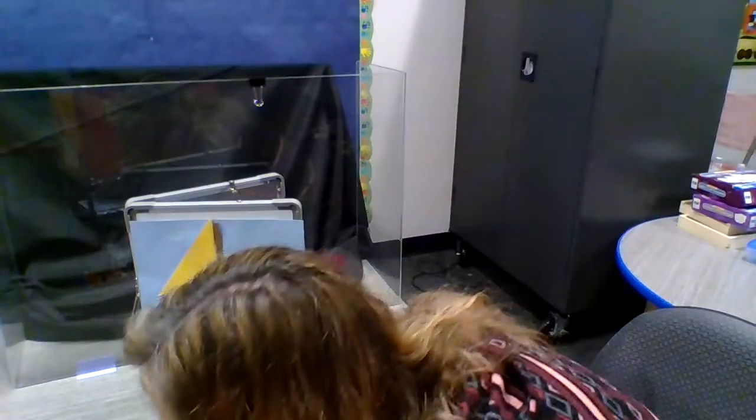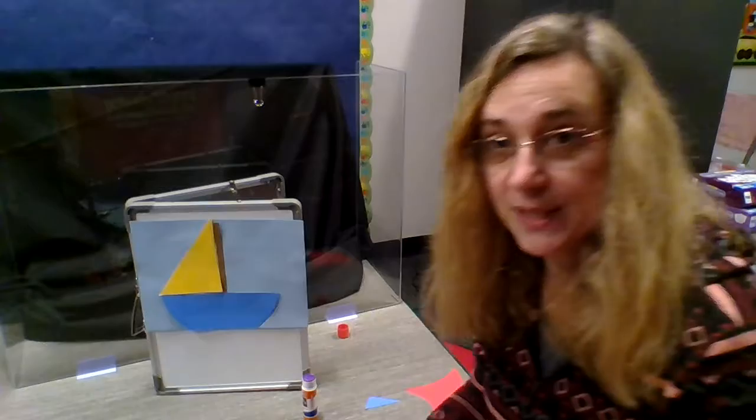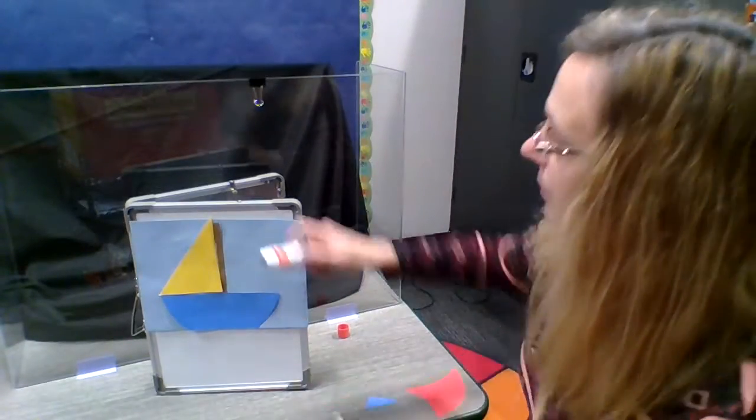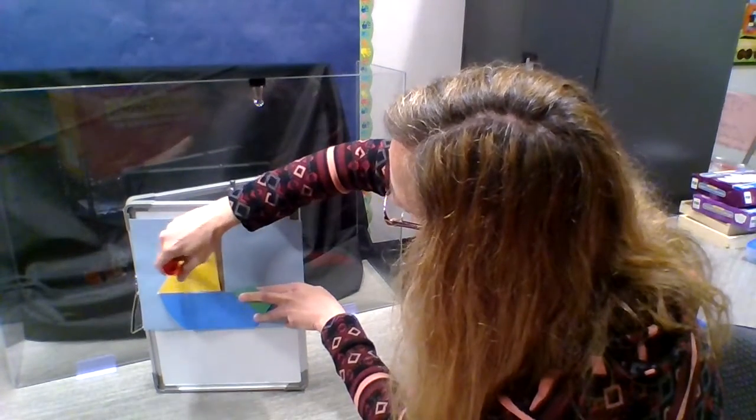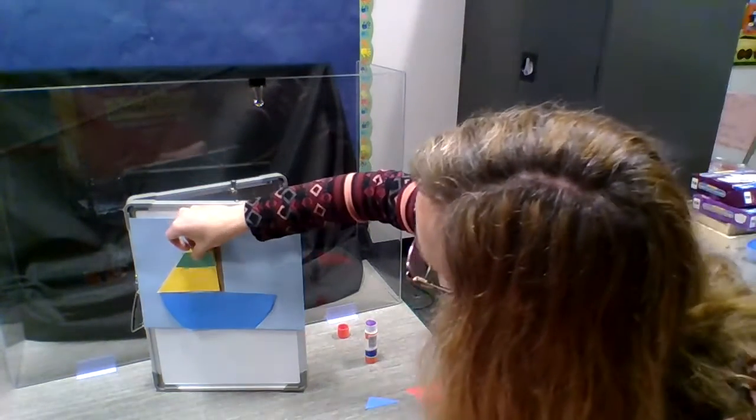And you'll notice in the picture, the sail has a green stripe. The yellow sail does. So we're going to put a green stripe right in the middle of the yellow sail.